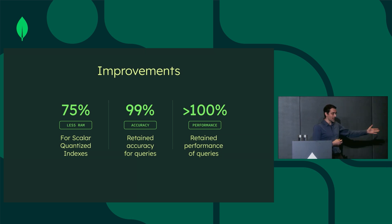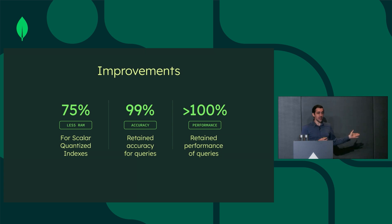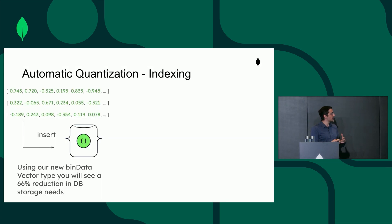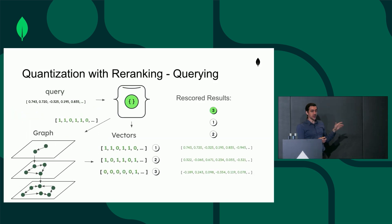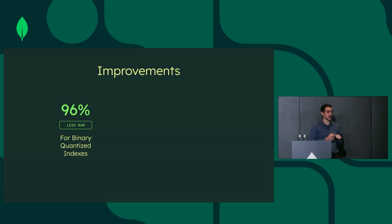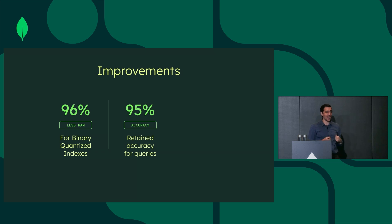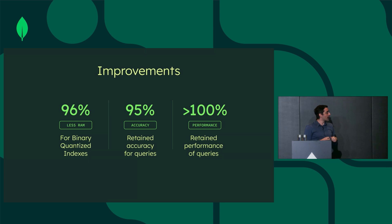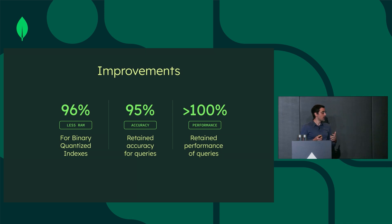These improvements are dramatic and really impressive on their own. But where it gets kind of crazy is when you enter the realm of binary quantization. Binary quantization is where we're also doing rescoring. With this approach, you get to reduce the amount of memory needed to support these indexes by 96% — a massive reduction in memory. You maintain 95% accuracy. And again, you're seeing even better performance than before. Just massive gains across the board — a strong story in every dimension.